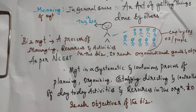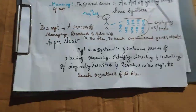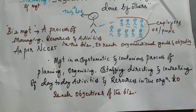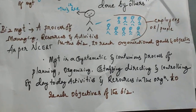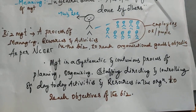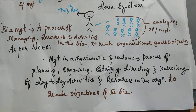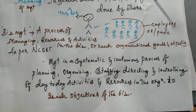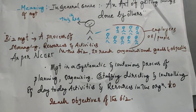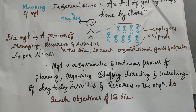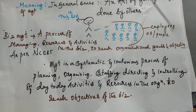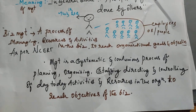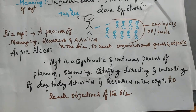Let us discuss the meaning of business management as per NCRT. In the exam, you should write this meaning for the question 'what is business management?' Management is a systematic — meaning in order, in a chronological order — and continuous process. Continuous means very regular, daily, everyday, for every activity.